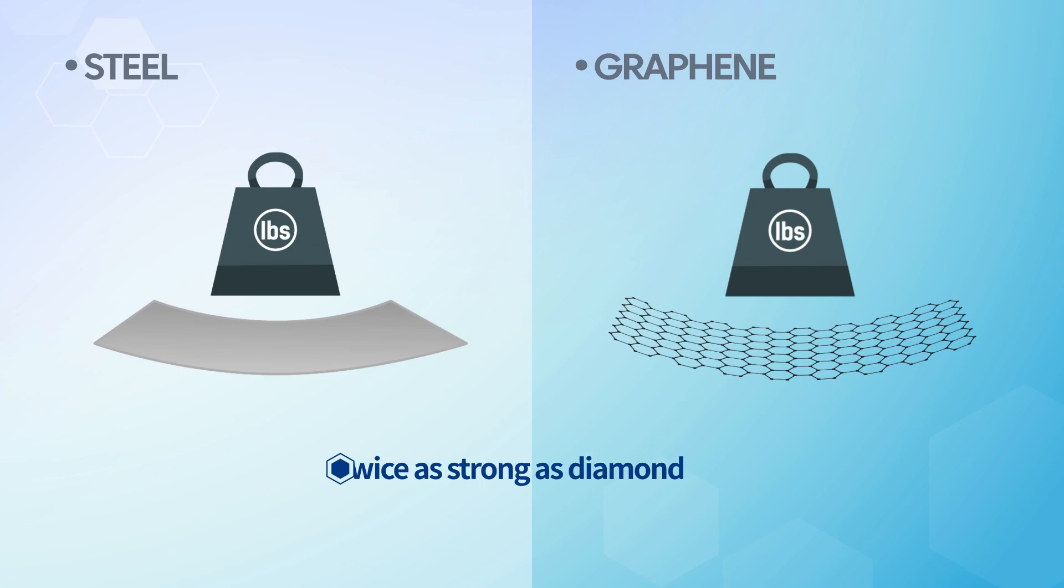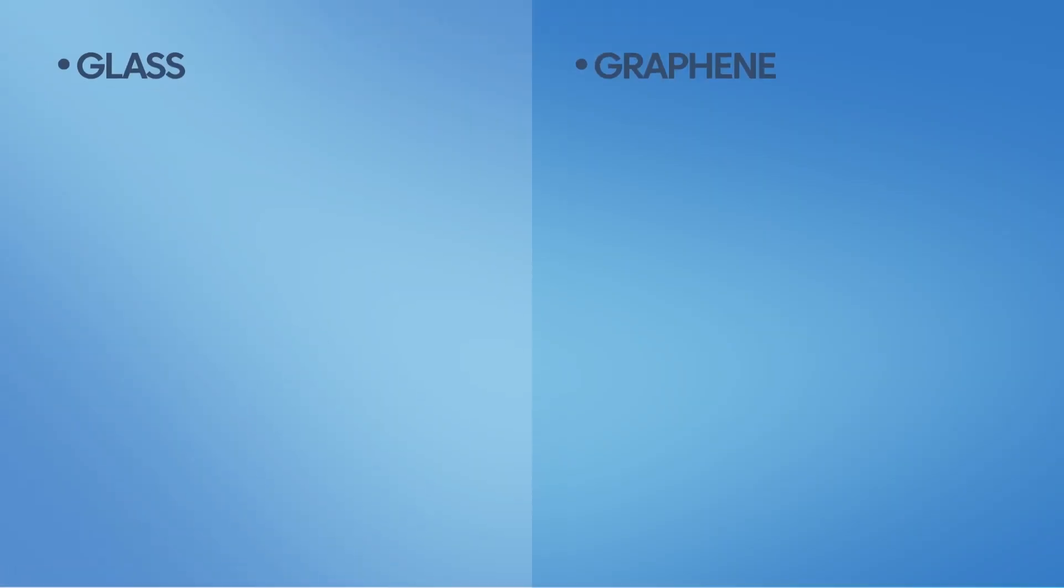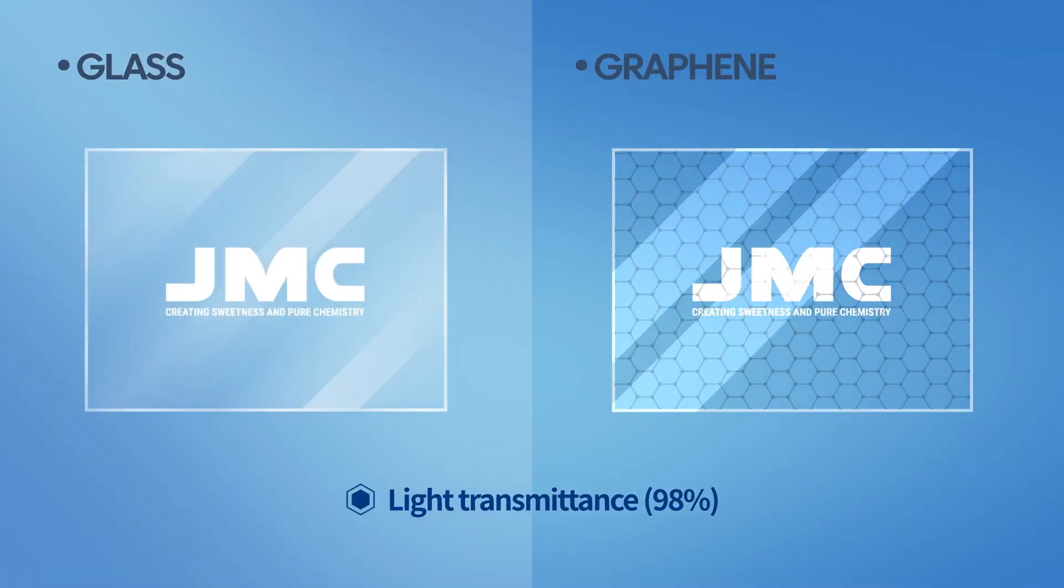Although graphene is only 0.2 nanometers thick, it has a very high physical and chemical stability.